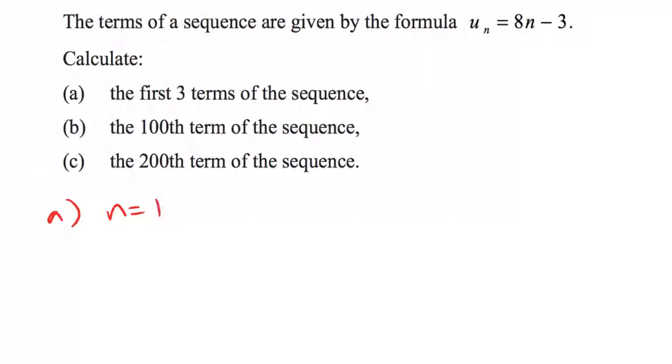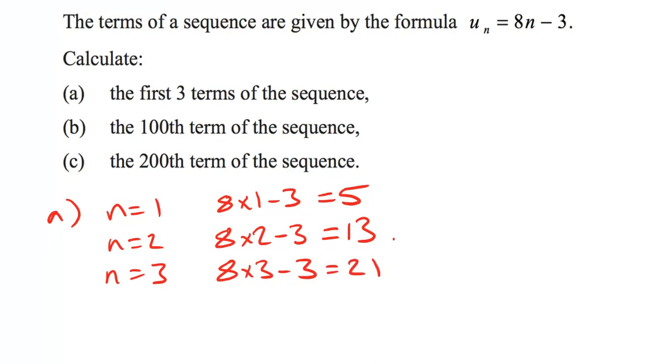We're going to need to work out this formula when N is 1. So 8 times 1 minus 3 is 5. That's our first number in the list. N is 2. 8 times 2 minus 3, that is going to be 13. And N is 3.